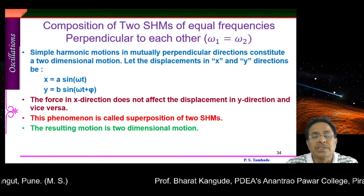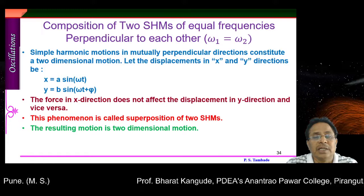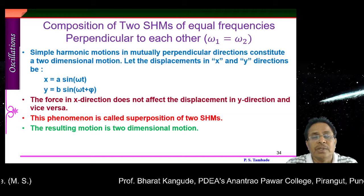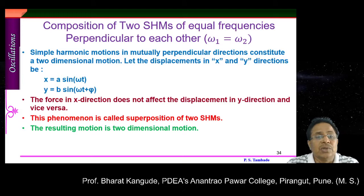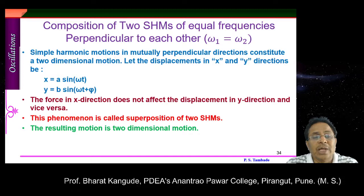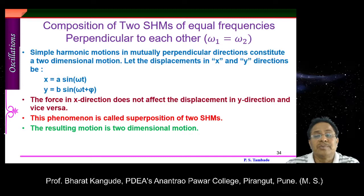From this simple analysis we can understand the resultant path followed by a particle acted upon by two different types of SHMs — it is a very interesting path. So let's take simple harmonic motions in mutually perpendicular directions, which constitutes a two-dimensional motion. It gives resultant to a two-dimensional motion. Let the displacements in x and y directions be as follows.